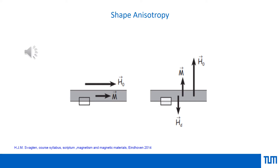We want to take a look at shape anisotropy — how the shape of a magnet influences the preference of the magnetization direction for a certain plane or axis. Shape anisotropy creates a favorable energy term for magnetization to be aligned along the long axis of a needle-like sample, and creates an unfavorable term for magnetization to be along the surface normal.